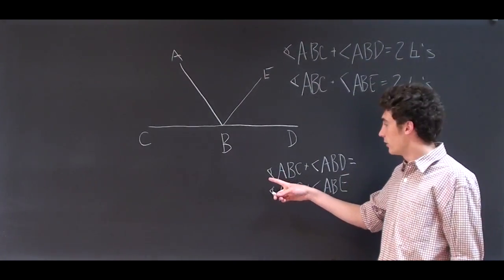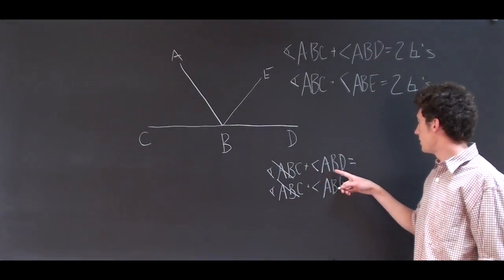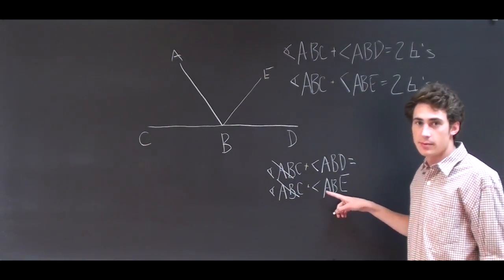If I subtract angle ABC from both sides, we have that angle ABD is equal to angle ABE.